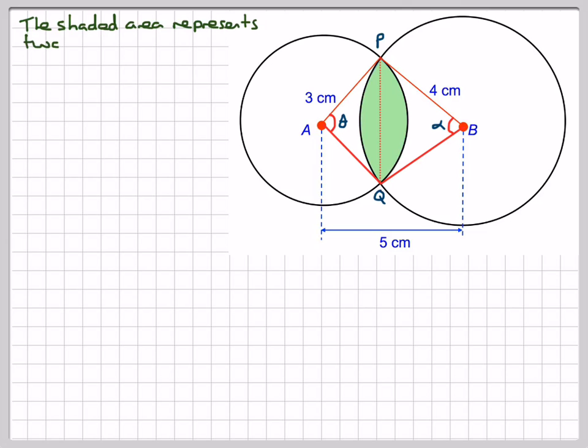The shaded area represents two segments, S1 and S2. The area of a segment is half R squared times theta minus sine theta. Theta must be measured in radians.